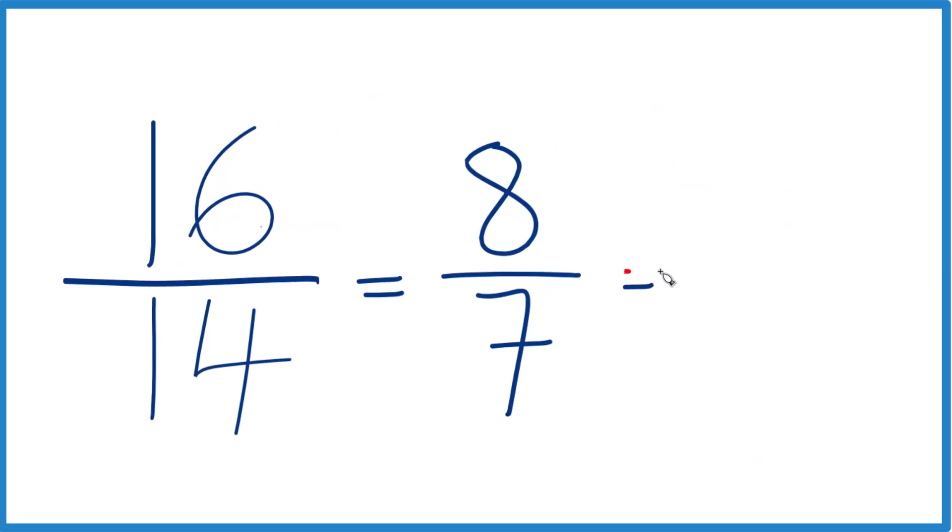7 goes into 8, let's see, 1 times 7, that's 7 with 1 left over.